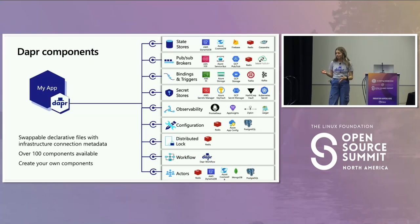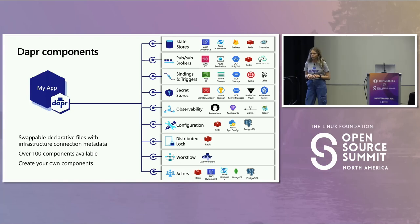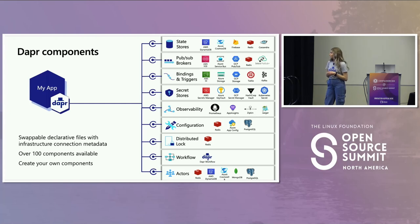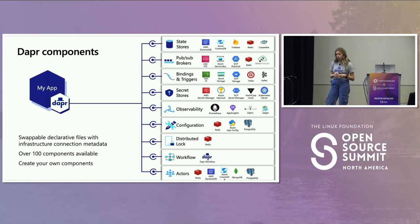So how does DAPR work with infrastructure? It uses what's called DAPR components. These are essentially swappable declarative infrastructure configuration files that have the infrastructure connection data embedded into them, written in YAML. There are a number contributed by the community — over 100 components available, all open source, written in Golang. You can check them out at the components contrib repo.